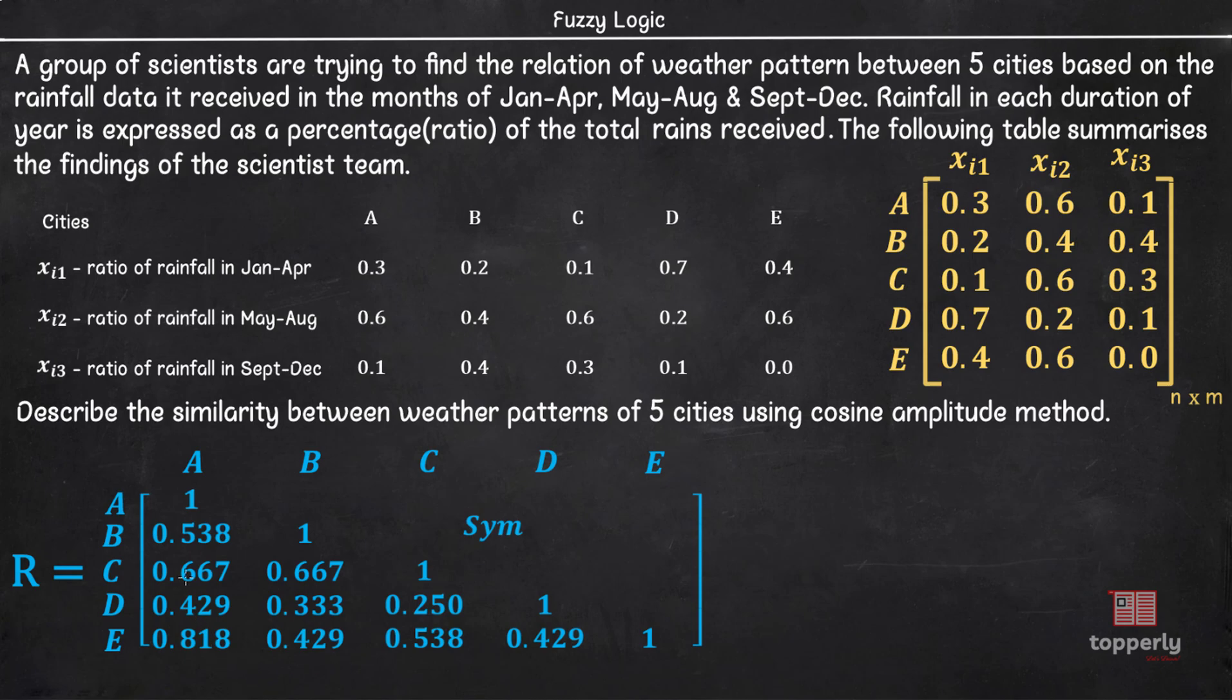Here, the values may be different from cosine amplitude method but the essence remains the same. That is, city E is more similar to city C than city D.